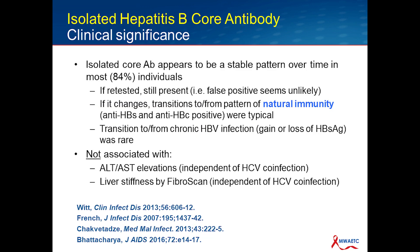The data for that, at least in the HIV world, comes from the Multicenter AIDS Cohort Study — the MACS cohort — which evaluated 2,286 men who have sex with men, half of whom had HIV, all of whom had an isolated core profile, followed for four years. It turns out that in those who retested, the isolated core antibody appeared to be a pretty stable pattern over time, which suggested that the false positivity theory (scenario four) seems unlikely, especially in a group of MSM. If it changed at all, the transition was to and from a pattern of natural immunity — essentially, you'd see an isolated core, then the surface antibody pop up positive, and then revert back. Transition to and from chronic infection with the gain or loss of surface antigen was actually rare.